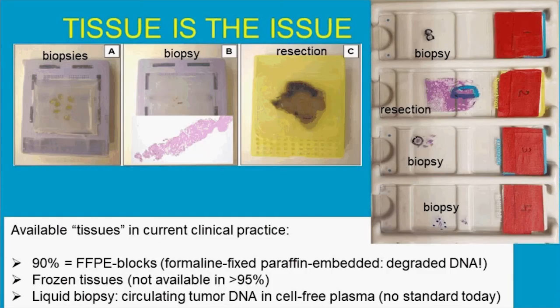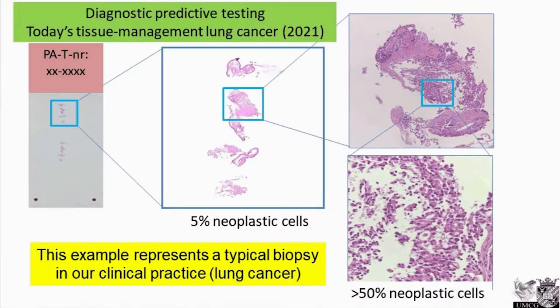When a patient biopsy is taken by the pulmonologist and sent to pathology, we fix the material in formalin and embed it in paraffin. Here you see three examples of tissue blocks. The resection marked C is a quite large piece of tumor tissue, but this is not what we normally receive. Biopsies are much smaller, as indicated in tissue blocks A and B — very tiny tissue. The pathologist cuts these tissue blocks, and this is a representative case of what we receive to perform molecular testing.